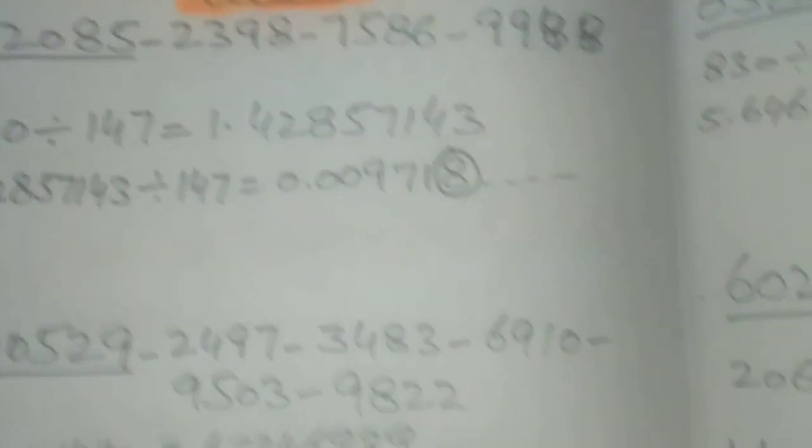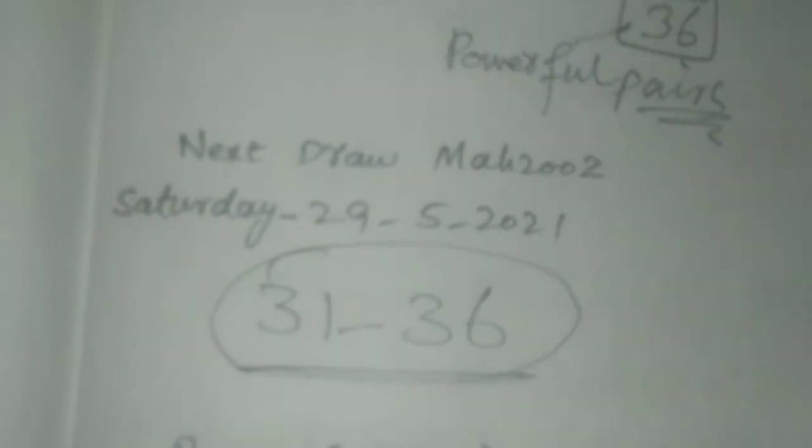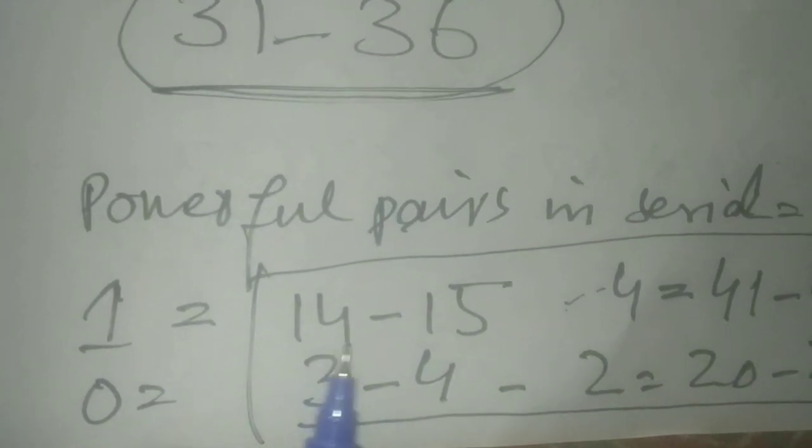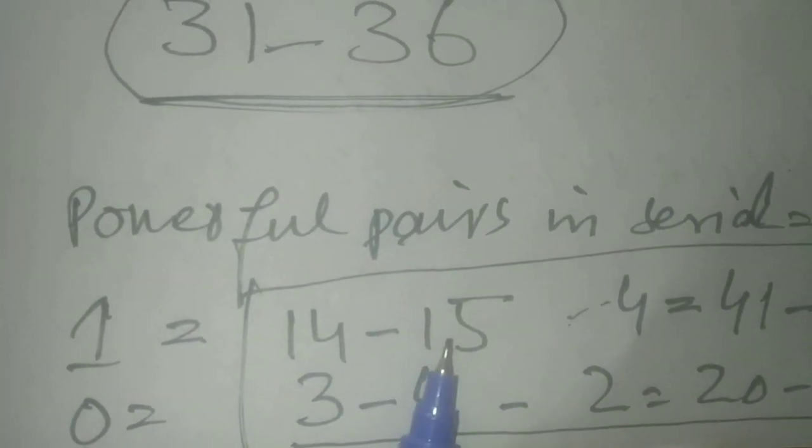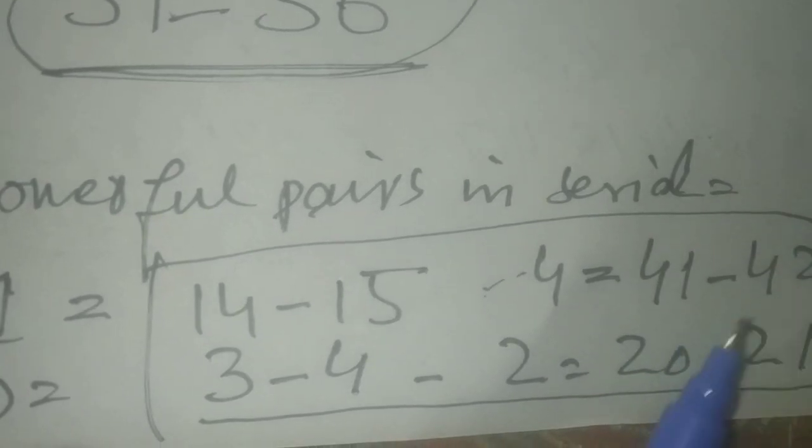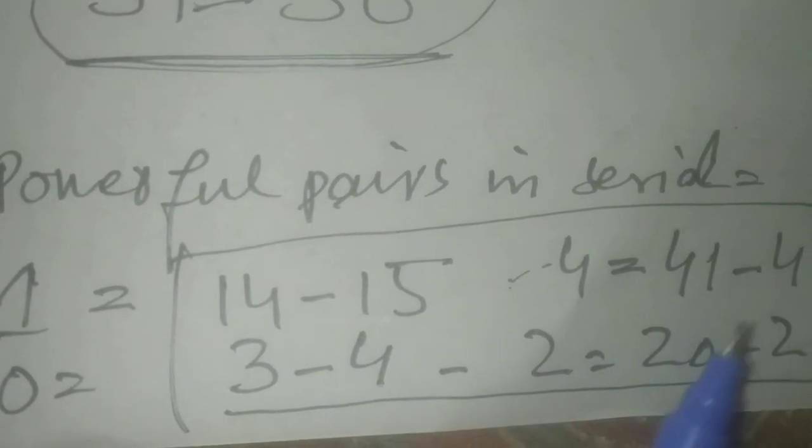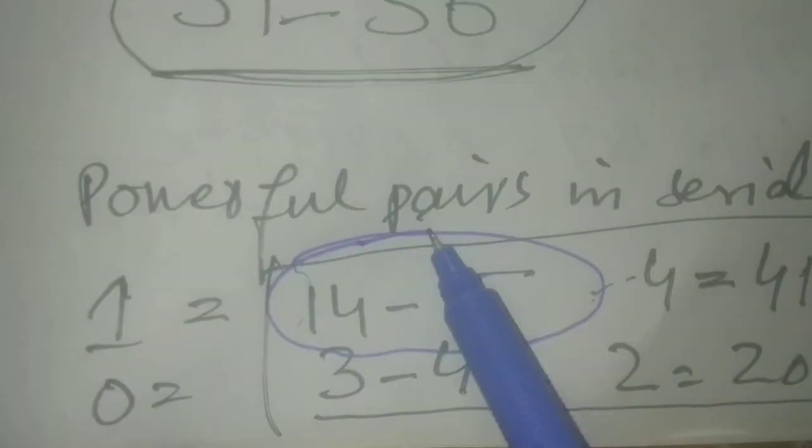Dear friends, in previous draw I told you the pairs have chances to come in serial: 1-14-15, 4-41-42, 0-3-4, 2-20-21. 14 and 15 has passed, okay.